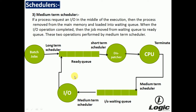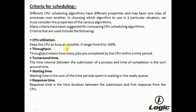These are the three schedulers used in the operating system. Next are the criteria for scheduling. Particular criteria are used for selecting CPU scheduling algorithms, as different algorithms have different properties. In choosing which algorithm to use in a particular situation, we must consider the properties of the various algorithms. The first criterion is CPU utilization: keep the CPU as busy as possible, with a range from 0 to 100%. The second is throughput: how many jobs are completed by the CPU within a given time period.